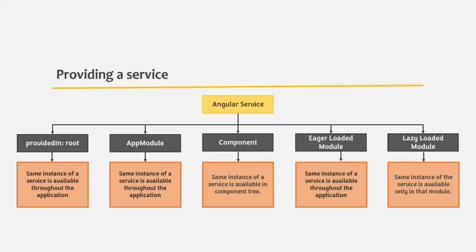From our previous learnings, we know that we can provide an Angular service from the app module, or we can also provide a service using the providedIn property, or we can also provide a service on a component. When we provide a service using the providedIn property and we set it to root, the same instance of that service is available throughout the Angular application — in all the directives, all the components, all the pipes, etc. And the same thing is true for app module as well. When we provide a service in the providers array of app module, the same instance of that Angular service is available throughout the application, the same behavior as with the providedIn property.